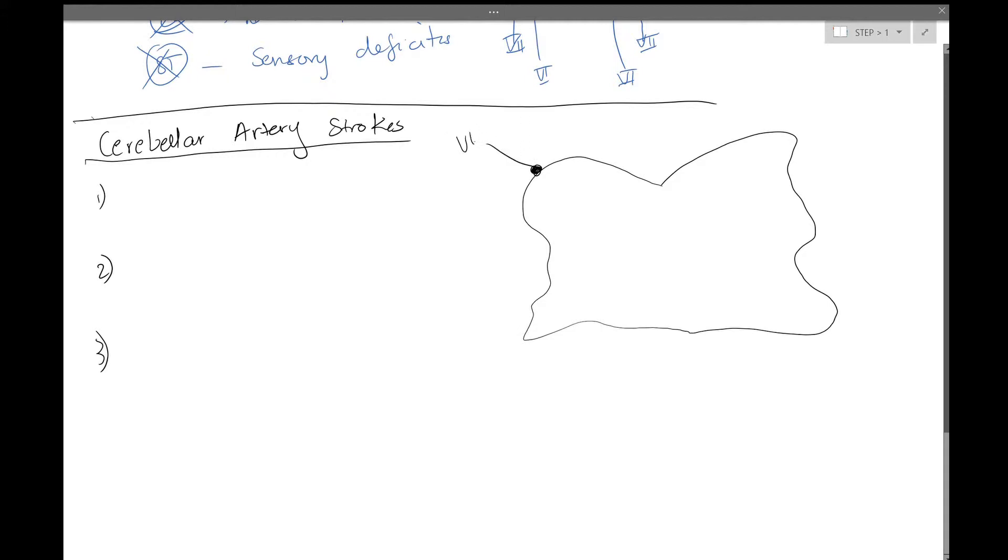Technically, this is one of the pontine cranial nerves, but laterally, we're going to draw cranial nerve 8. This is basically the junction of the pons and medulla. So cranial nerve 8 is right here.